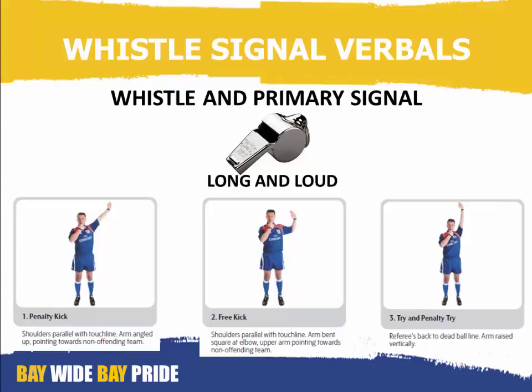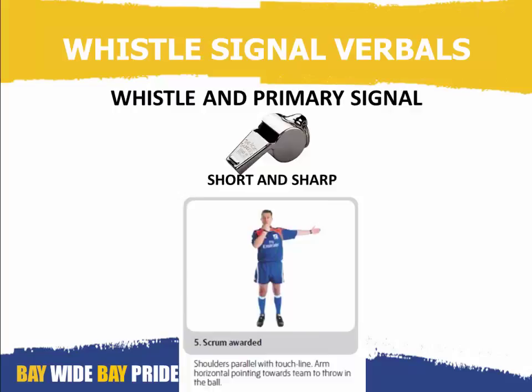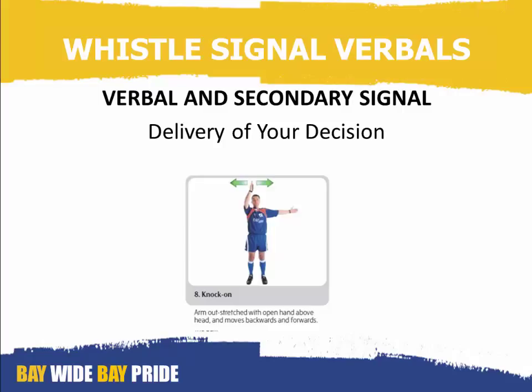The short and sharp whistle is used when you award a scrum. The verbal and secondary signal is used during the delivery of your decision. For example, you may have blown a short, sharp whistle to award a scrum, and the delivery of your decision has a verbal instruction such as 'knock-on blue, scrum red ball.' You'll also perform a secondary signal — in this instance, the secondary signal for a knock-on is your arm outstretched with an open hand above your head, moving it backwards and forwards to indicate the ball has been knocked on.